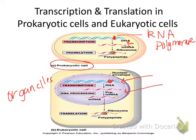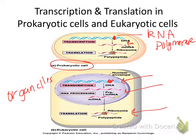The message mRNA will be sent to the ribosome. RNA nucleotides use ribose — R-I-B-O-S-E — which is still a five-carbon sugar, but instead of deoxyribose, it uses ribose. It also doesn't use thymine — it uses uracil. The reason is that thymine is a chubby nucleotide and can't fit, so it replaces it with uracil, which is a skinnier nucleotide.